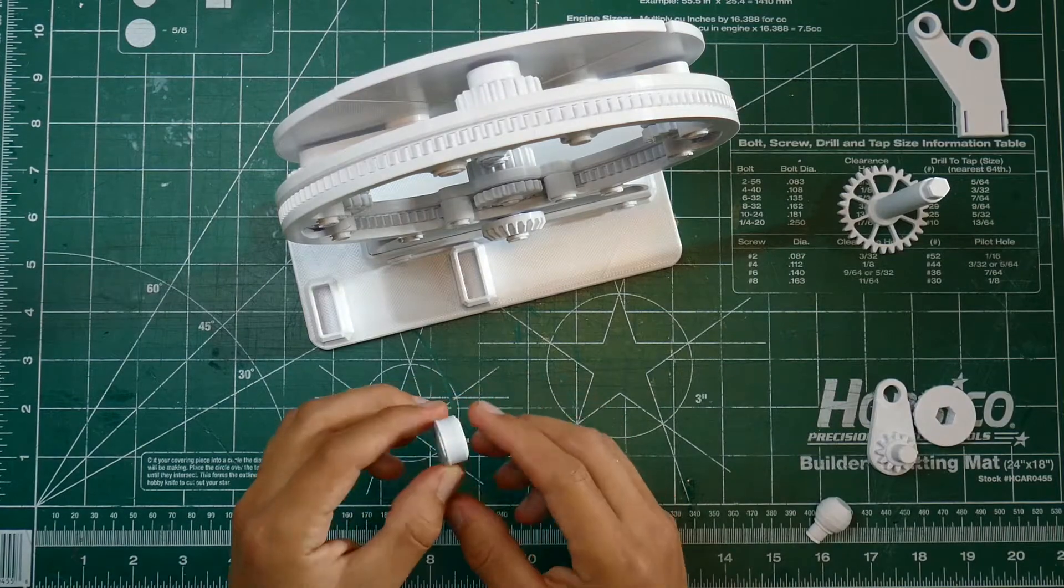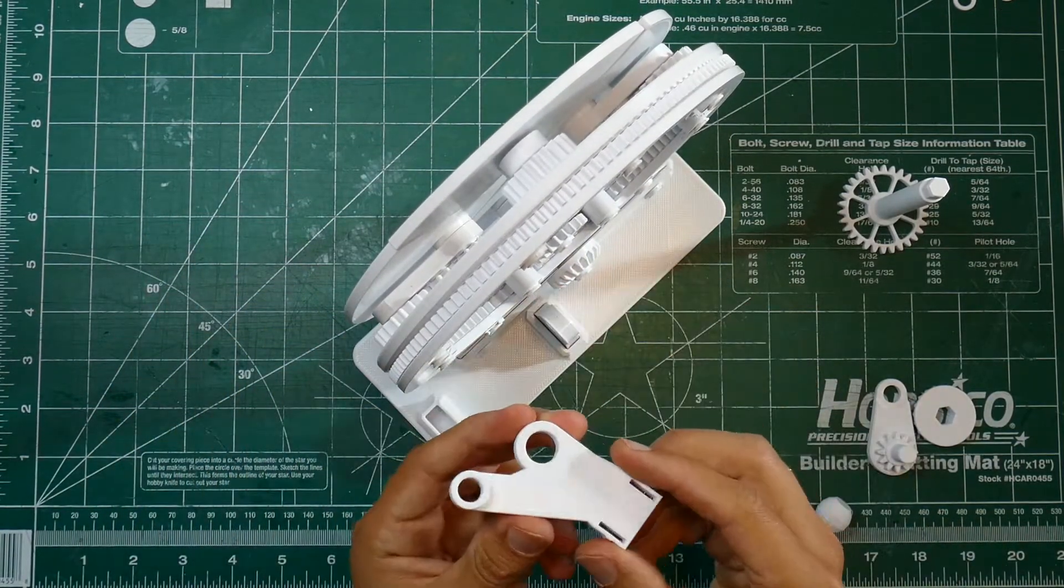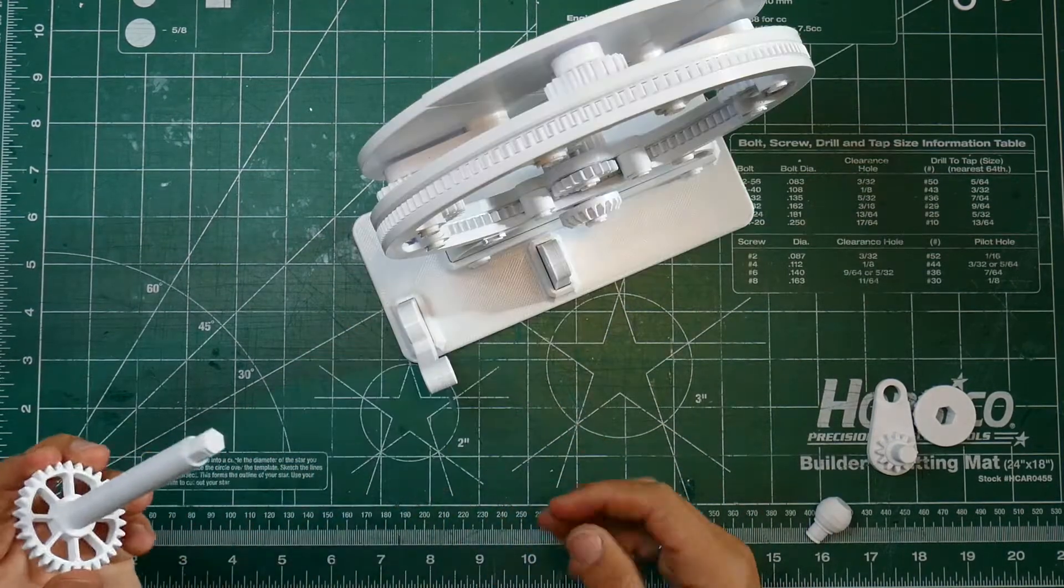Next, grab this piece and with the flange facing towards the bevel gear, pop that into the base. Grab the other piece like this, that will pop into the base in this orientation.